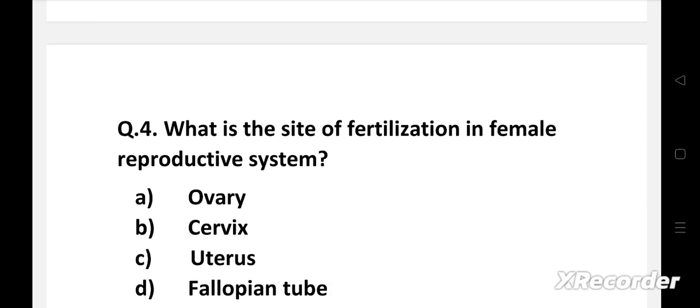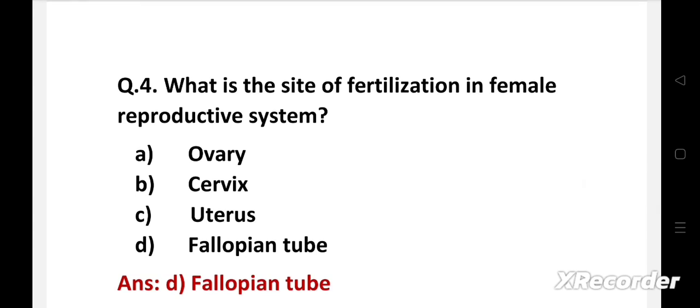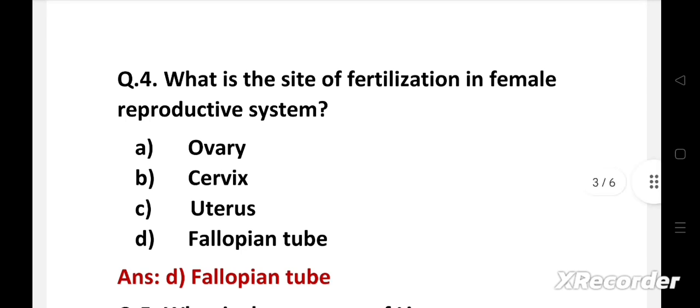Next question. What is the site of fertilization in female reproductive system? Option A: ovary, B: cervix, C: uterus, D: fallopian tube. Right answer is option D: fallopian tube. Fertilization occurs at the ampullary part of fallopian tube.